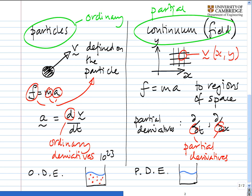But of course, if we try to look at a fluid in terms of particles, we'd soon find that we've got 10 to the power of 23 or more ordinary differential equations to solve, one for each particle, and that quickly becomes entirely impractical. Whereas if we treat a fluid using partial differential equations, we just have to solve one set of partial differential equations for the entire fluid, which is much, much easier.